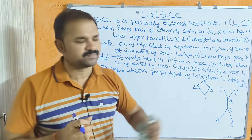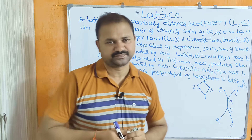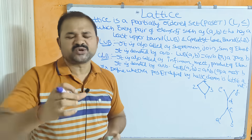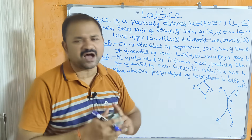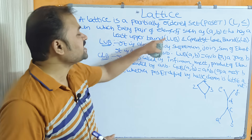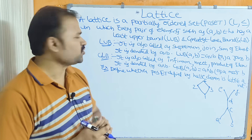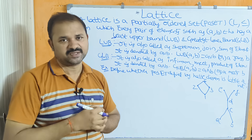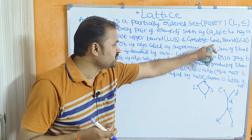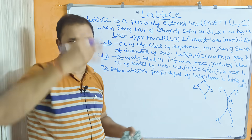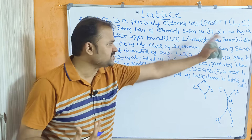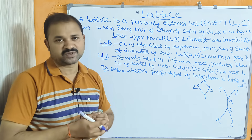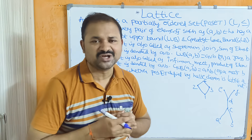A poset is denoted by a pair where the first argument is the name of the set and the second argument is the relation. A lattice is a poset in which every pair of elements A, B belonging to L has a least upper bound as well as a greatest lower bound. The least upper bound can also be called as supremum.